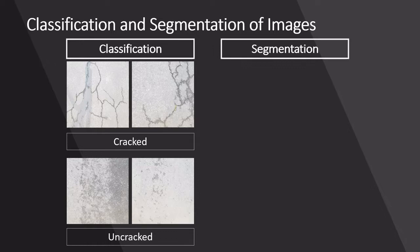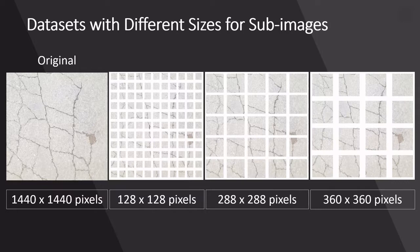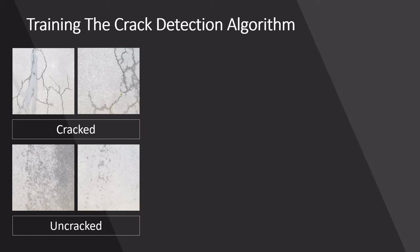To improve the accuracy of the training model, the dataset was divided into different sizes. Classified data were then fed into and trained on a Convolutional Neural Network (CNN) for crack detection.